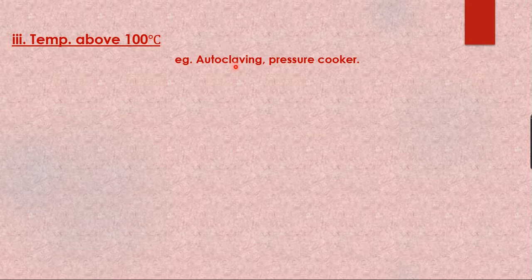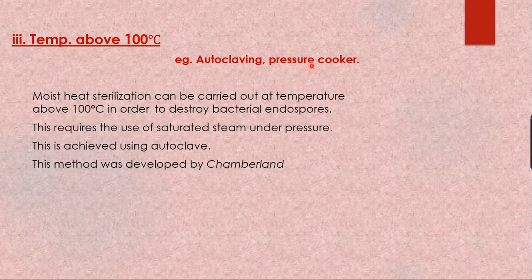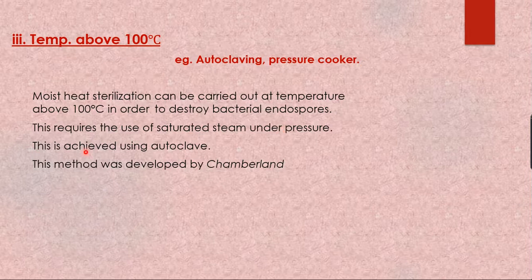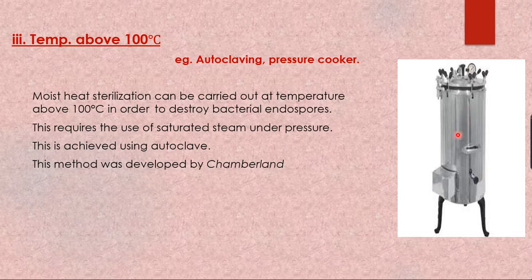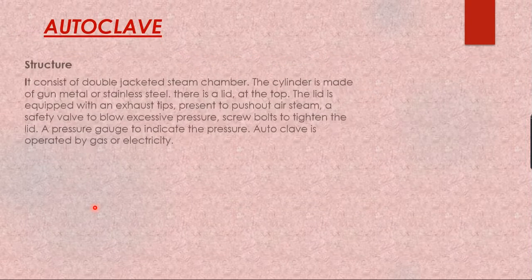The third method is temperature above 100°C, also called steam under pressure. Moist heat sterilization carried out above 100°C can destroy bacterial endospores, but this requires the use of saturated steam under pressure. This is achieved using equipment called an autoclave, and the process is called autoclaving. This method was developed by Chamberland. In the laboratory we have different types of autoclaves — here is a vertical type, which has a pressure gauge and double walls.